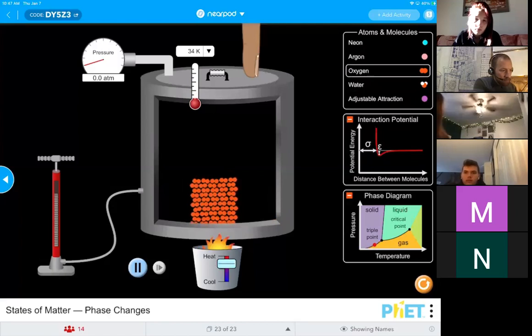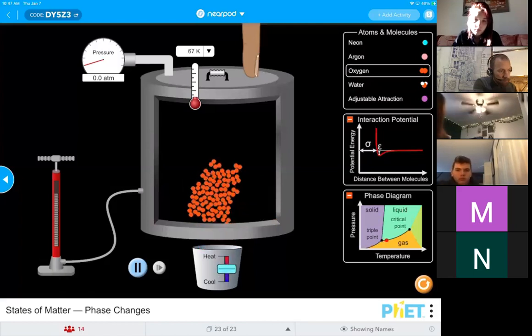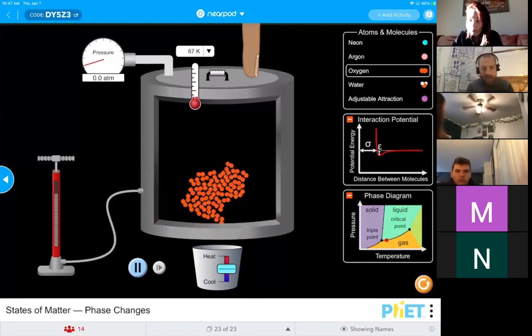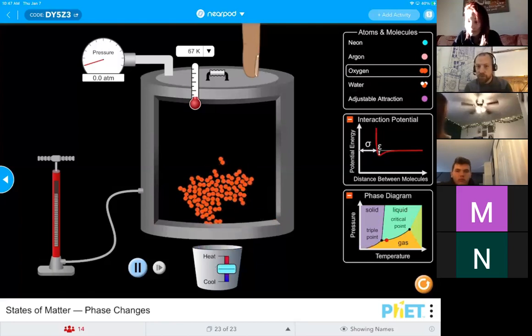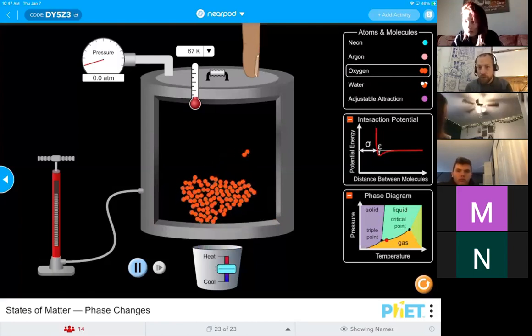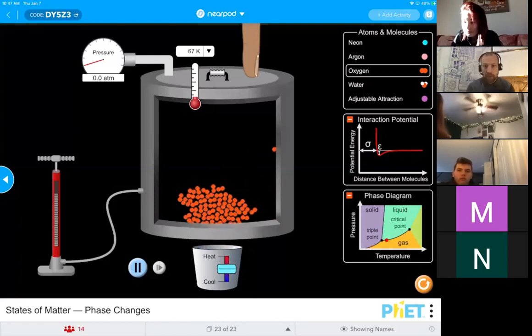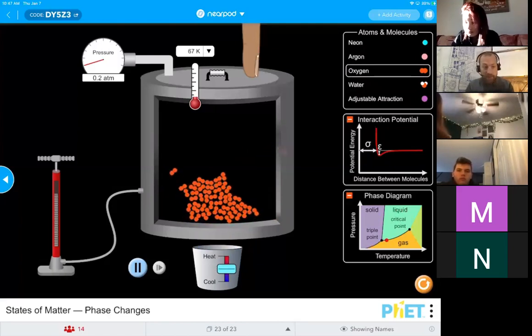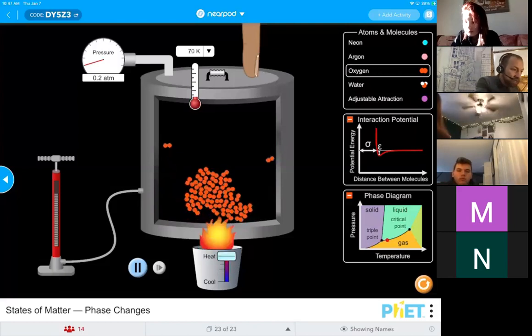Then we're going to have a liquid here soon. See how the shape is now indefinite, and those particles are able to flow over one another? We are now at a liquid state. So they have a definite volume, but an indefinite shape. If I continue to increase the heat.